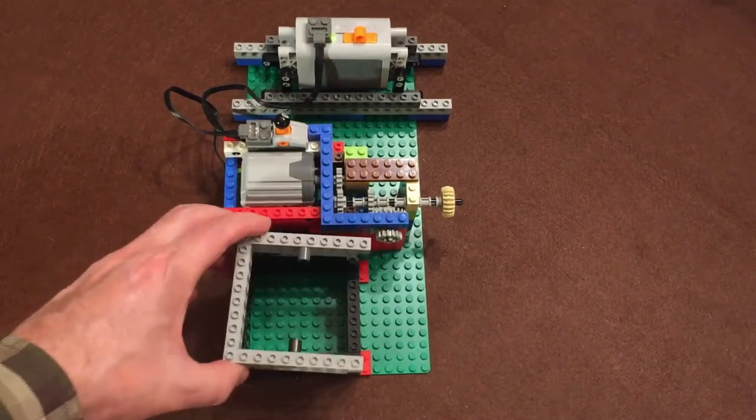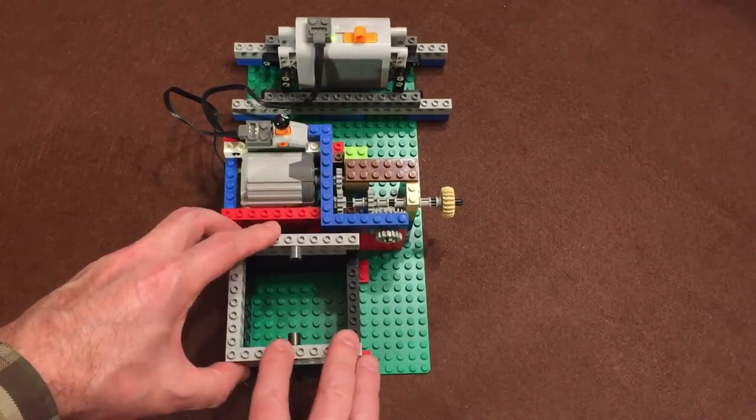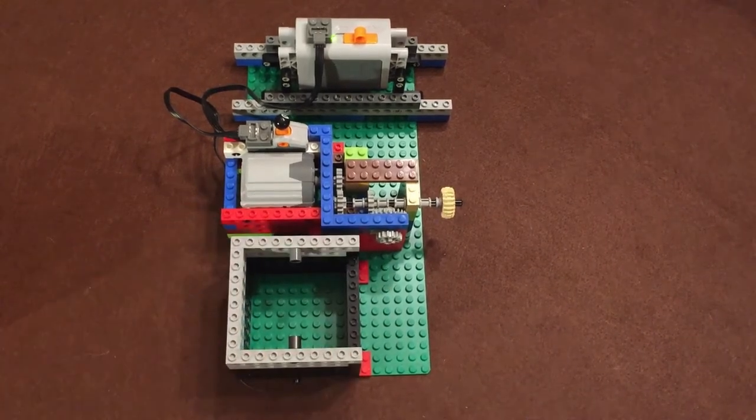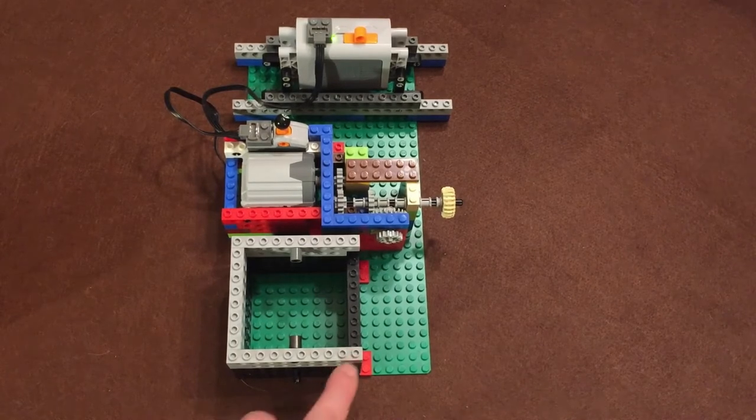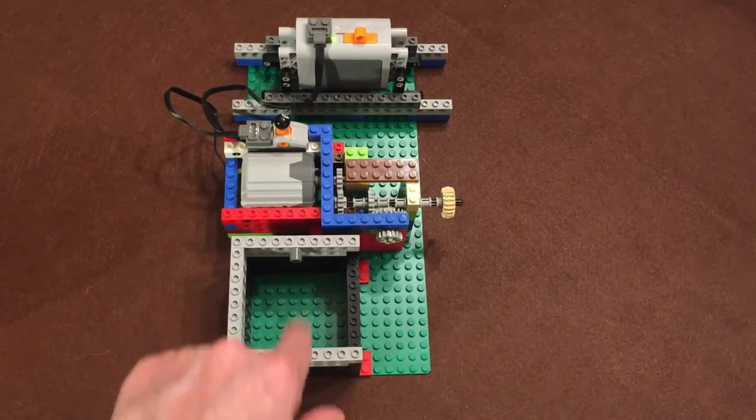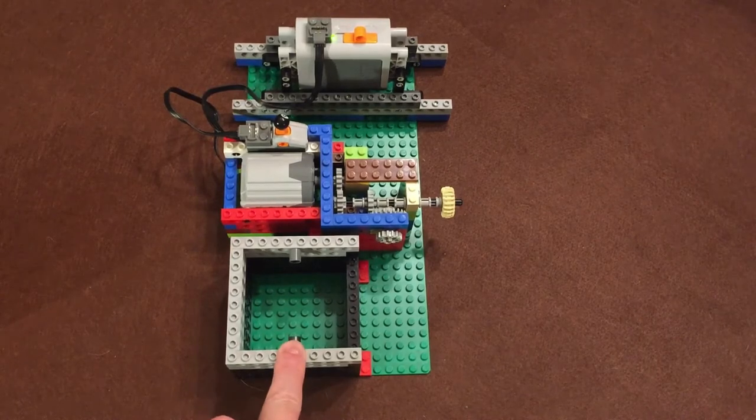The next two rows are going to be left open at the front. Also, I'm using technique bricks here, because somewhere on row 6 I'm going to want to attach pins that will support the floor of the hopper. Where I put them exactly depends on the design of my hopper and how much slope I want it to have.